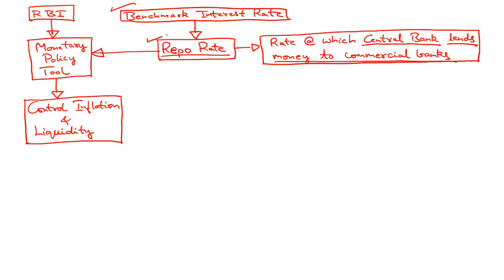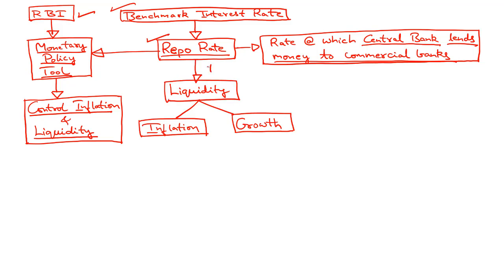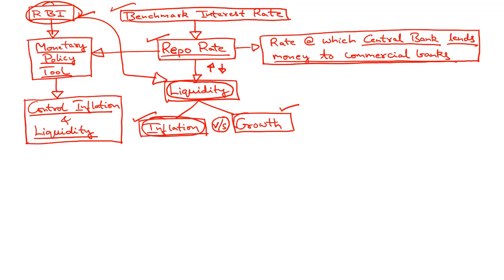The REPO rate is considered a monetary policy tool available to the RBI in order to control inflation and liquidity in the market. By increasing or decreasing the REPO rate, the RBI can determine how much liquidity will be available in the market. This in turn determines whether the RBI is looking to control inflation or promote economic growth. The primary objective of the central bank is to manage liquidity and strike a balance between the conflicting demands of controlling inflation and promoting economic growth.